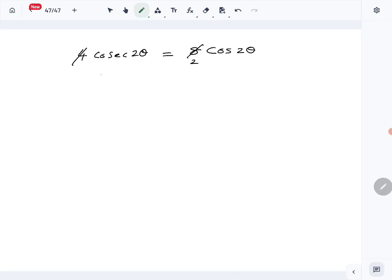So we have cosec 2 theta, which is 1 over sin 2 theta, is equal to 2 cos 2 theta. Or 2 sin 2 theta cos 2 theta is equal to 1.